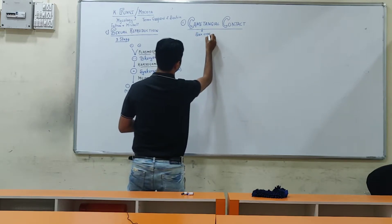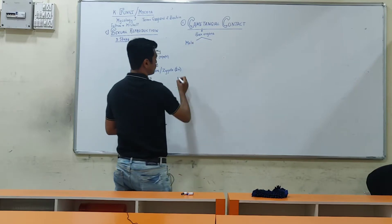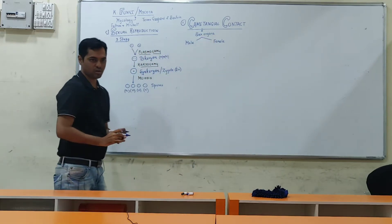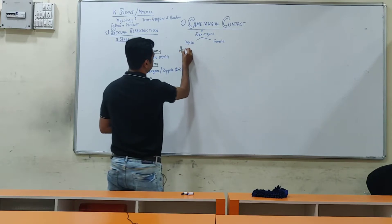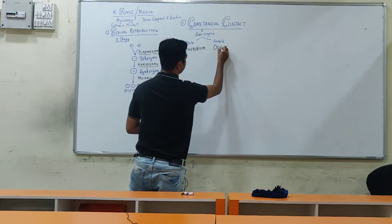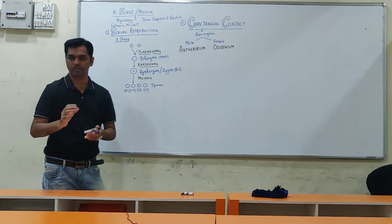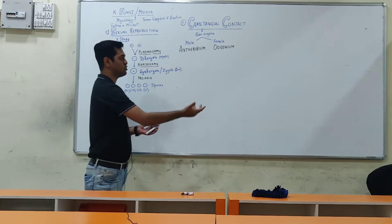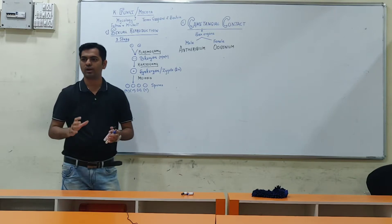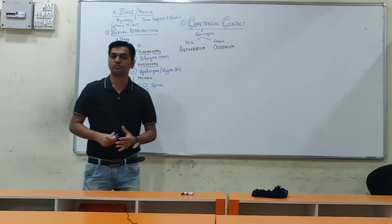Now let's start the methods of sexual reproduction. The first method is called Gametangial Contact. Gametangia means sex organs. So there will be one male gametangia — the male sex organ — called the antheridium, and one female gametangia — the female sex organ — called the oogonium. In plants, this term changes to archegonium, but in thallophytes such as fungi, we use the term oogonium for the female sex organ.